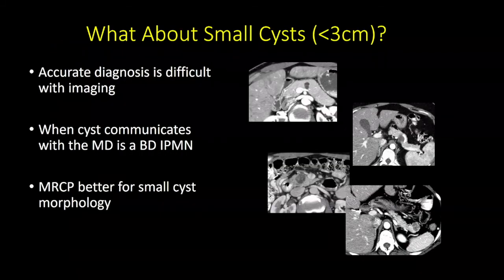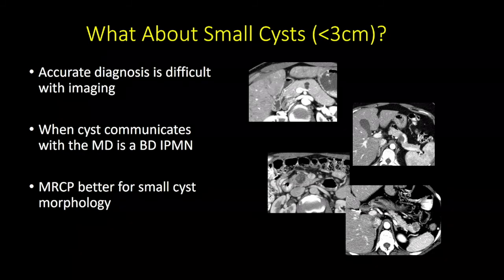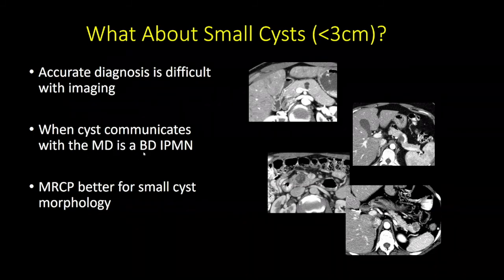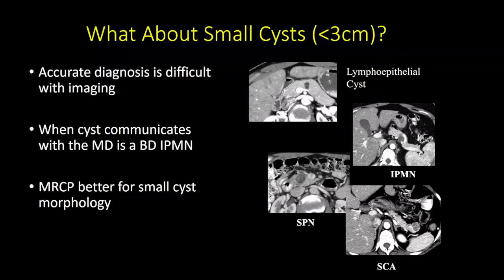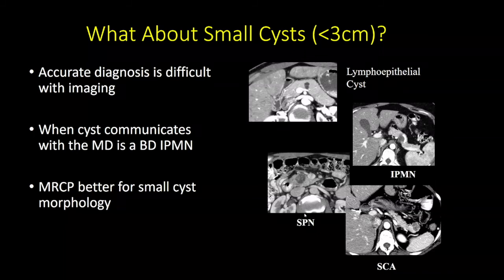For small cysts less than three centimeters, accurate diagnosis is challenging. Ductal communication is your friend — when you see it, you can call it a branch duct IPMN. MRCP is excellent for morphology and better characterization of small cysts. Various small lesions can look similar: lymphoepithelial cyst, branch duct IPMN, SPEN, and small serous neoplasm may be indistinguishable without additional workup.